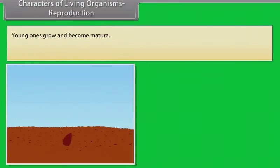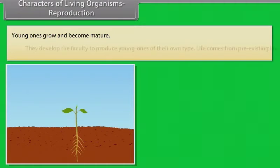Characters of living organisms - Reproduction: Young ones grow and become mature. They develop the faculty to produce young ones of their own type. Life comes from pre-existing life.